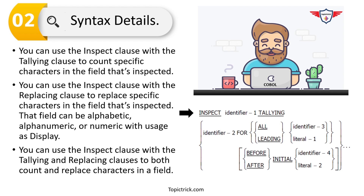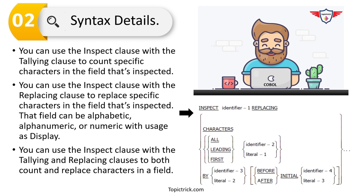The next keyword is TALLING followed by an identifier, which is a variable name. TALLING is used to count a specific character in that string. Other keywords such as ALL, LEADING, BEFORE, AFTER, and INITIAL followed by a variable name are additional options — for example, to count spaces after a specific character. Similarly, you have inspect with REPLACING and inspect with CONVERTING clauses, which you can use to convert or replace any character in the string.